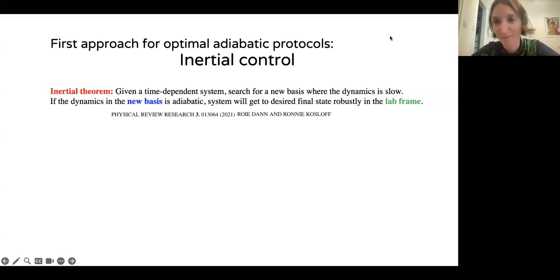I will show two approaches that we took to address this challenge. The first thing I want to present is something called inertial control. The idea of this work was motivated by work done by Woi Dan and Wani Kozlov from the Hebrew University. They introduced this paper that they call the inertial theorem. And this is the idea. Given a time-dependent system, any time-dependent system, one can search for a new basis where the dynamics is slow. This is kind of similar to a rotating frame where you take a time-dependent system and you change the basis. In the new basis, the system is slow. If the dynamics in the new basis is adiabatic, the system will get to the desired final state robustly, also in the lab frame. So that's the idea.